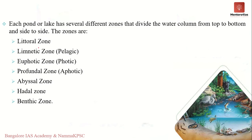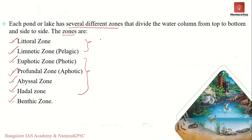Water bodies show many kinds of spatial variation in both vertical and horizontal dimensions, which is important for understanding the functions of an ecosystem. The different zones found are: the littoral zone, the pelagic zone, the photic zone also known as the euphotic zone, the aphotic zone also known as the profundal zone, the abyssal zone, the hadal zone, and the benthic zone. The littoral and pelagic zones represent horizontal zonation, whereas the rest represent vertical zonation.